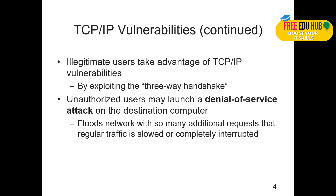Illegitimate users take advantage of TCP/IP vulnerabilities by exploiting the three-way handshake — SYN, SYN-ACK, and ACK. Unauthorized users may launch a denial of service attack that floods the network with so many additional requests that regular traffic is slowed, completely interrupted, or made unreadable, because the packets are fragmented in a way that the destination cannot read them.